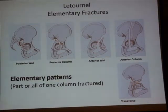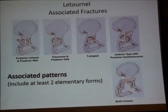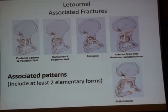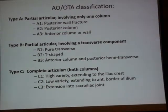We will talk about the anterior wall fracture and anterior column fracture — these are elementary patterns — and the anterior with posterior hemitransverse, one of the associated patterns. In the AO classification, the anterior column and wall are A3, partial articular A3, while the anterior column with posterior hemitransverse is B3.